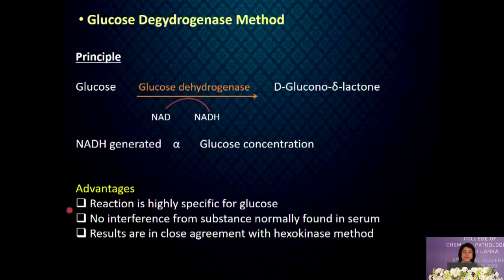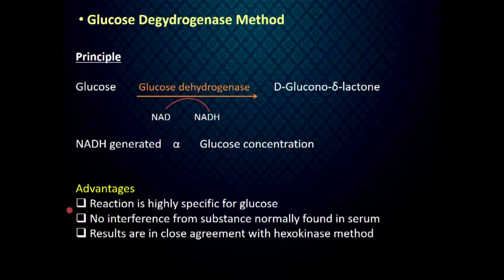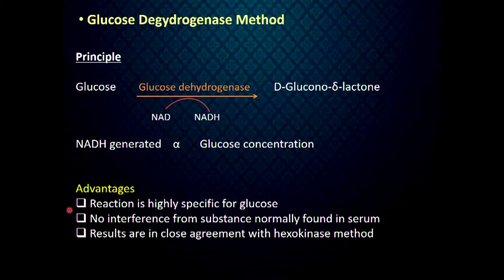The glucose dehydrogenase method also converts glucose to gluconolactone by glucose dehydrogenase, and the NADH generated is proportional to the glucose concentration in the sample. This reaction is highly specific for glucose with no interference from substances normally found in blood, and results are in close agreement with the hexokinase method.